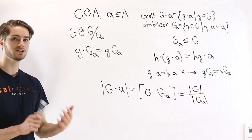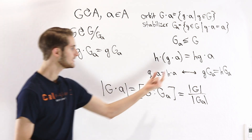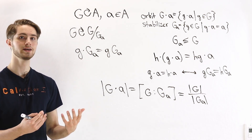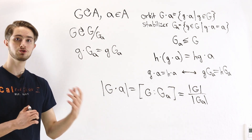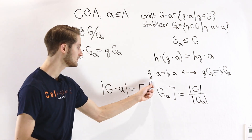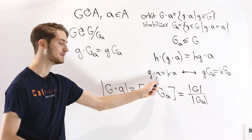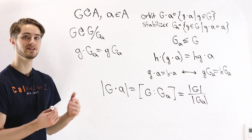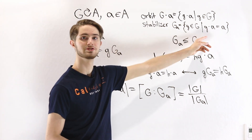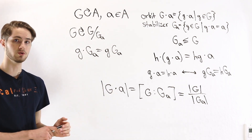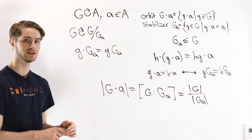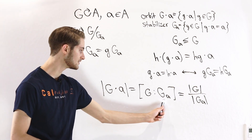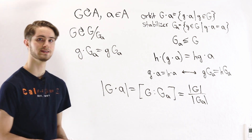Because group actions are always associative, multiplying in a group action is the same as multiplying the group elements, so every group action works in a very similar way. The only thing that makes two group actions differ is that sometimes distinct group elements give the same element in the orbit. We saw that G times A equals H times A only if G and H are in the same coset of the stabilizer. So the size of the orbit G times A equals the number of cosets of the stabilizer, which is the size of G divided by the size of the stabilizer.